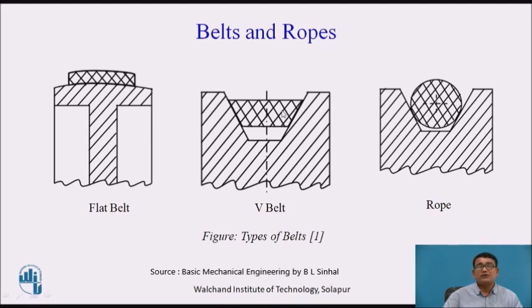It is a V-belt type. When you go for the V-belt type, the angle is maximum 30 degrees. And this is a rope type, that is a circular type belt.